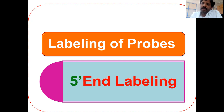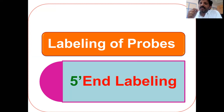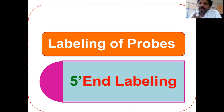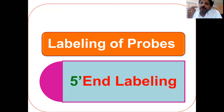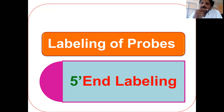Probes are prepared in two different ways. One is end labeling and the second one is all along the molecule. End labeling means labels are added at the ends — the 5'-prime end and the 3'-prime end. So labels added at the 5'-prime end or 3'-prime end is called end labeling.